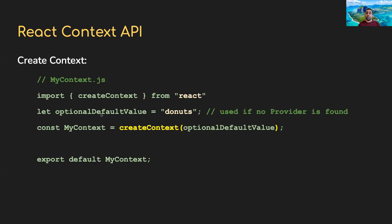I'm going to go over the syntax and then an example. To create a context object, first import createContext from React. Second, you can optionally provide a default value for your context object — this is used hypothetically if a provider is not found, and isn't too critical. Then call the createContext method and pass the optional default value. You'll get a context object back from that method call. Finally, export your context out of this file — nest it in a separate file, similar to how we create components.